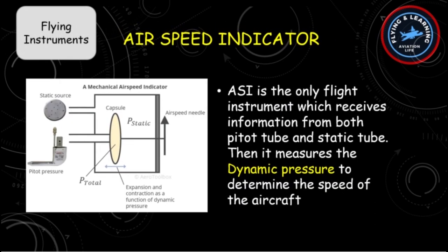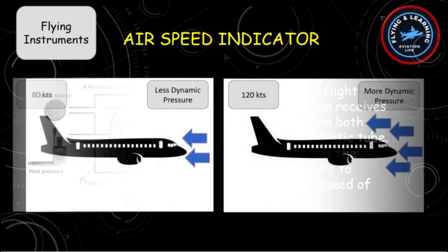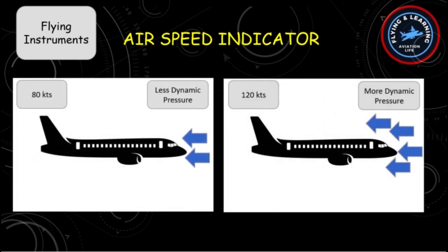The ASI is the only flight instrument which receives information from both the pitot tube and the static tube. It then measures the dynamic pressure to determine the speed of the aircraft. For better understanding, an aircraft moving at 80 knots has less dynamic pressure compared to an aircraft flying at 120 knots.